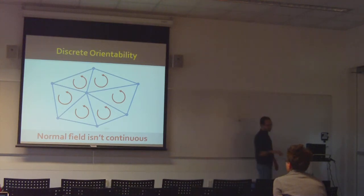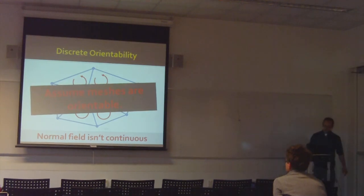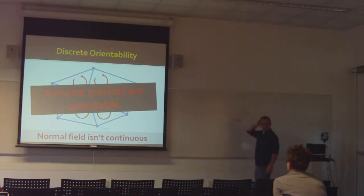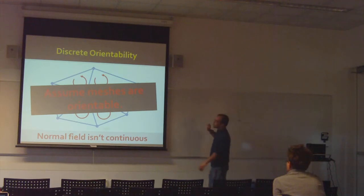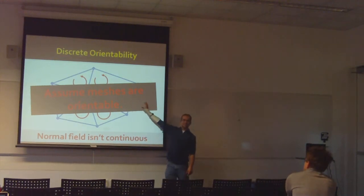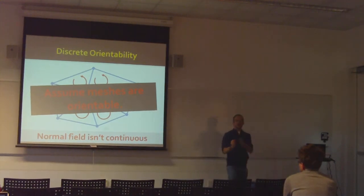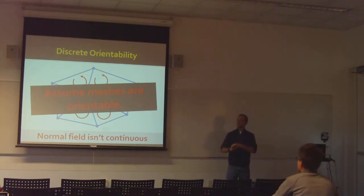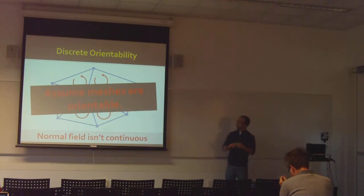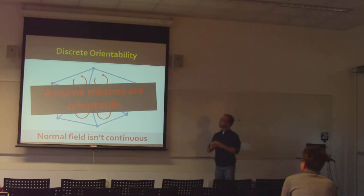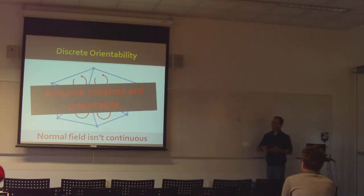In our list of assumptions, we're also going to assume for the most part that meshes are orientable. This is another question you should ask when evaluating the algorithms we talk about: does it require that our meshes are manifold — 98% of the methods we talk about will — and do we care whether our surface is orientable? A smaller but still considerable percentage of the algorithms will require orientability, sometimes in a subtle way.